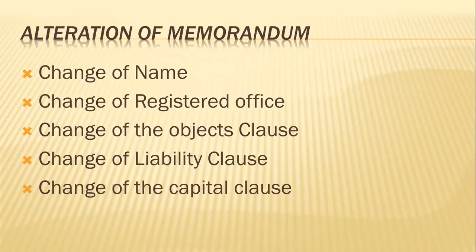Change of registered office: a company can shift its registered office from one place to another within the same city, town, or village, provided a notice of change is given to the registrar within 30 days of such change. But where the registered office is to be changed outside the local limits of any city, town, or village in the same state, a special resolution to that effect must be passed. However, the alteration of the place of the registered office from one state to another shall take effect only on confirmation by the National Law Tribunal on petition. A notice of such change shall also be given to the registrar within 30 days of the change. These two changes in the registered office do not involve alteration of the memorandum.